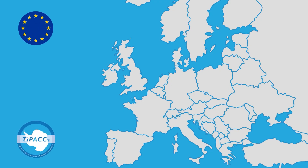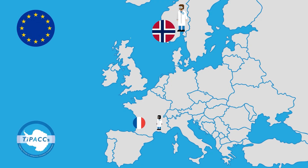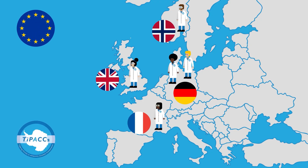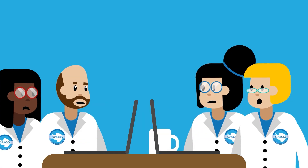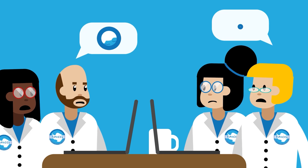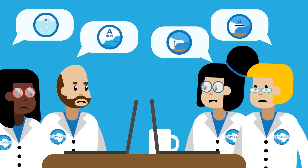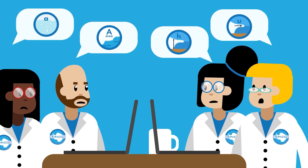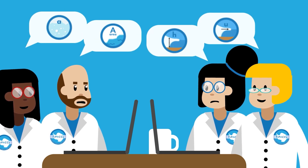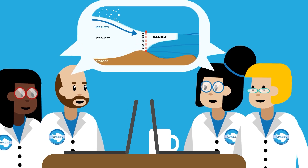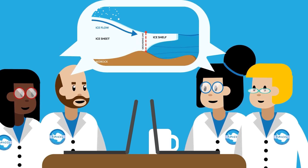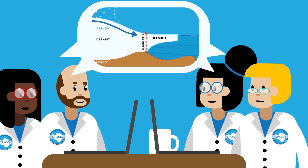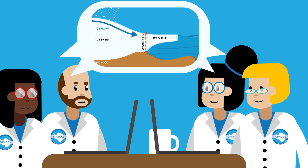TIPAX is a European research project that has been designed to address this question. It gathers researchers from five institutes in four European countries. To make progress, oceanographers and glaciologists from TIPAX had to join forces. By combining their work, their numerical models can simulate the behaviour of the Southern Ocean and the Antarctic ice sheet together.